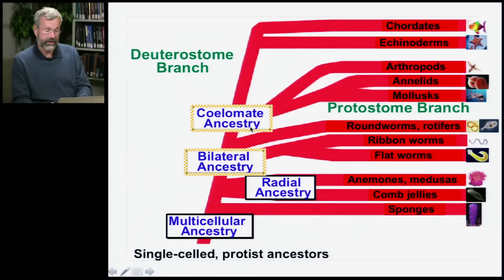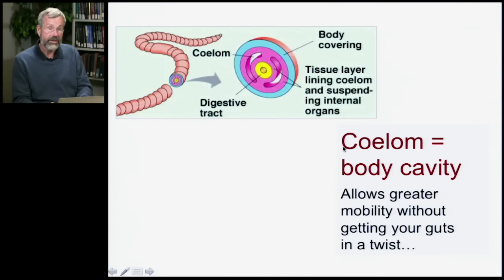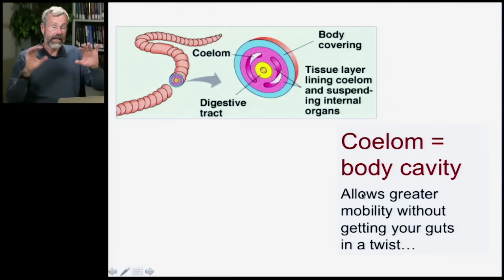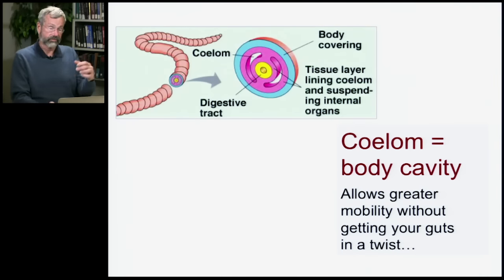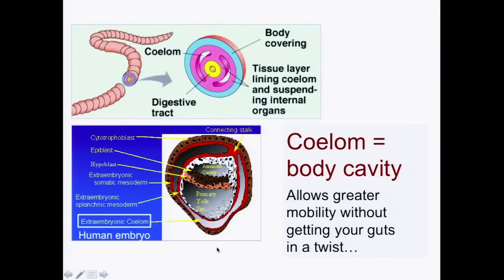Next we want to look at the coelomates, which give rise to many more complicated organisms. A coelom is a body cavity separated from the outer body. In an earthworm, you have the body covering and then the coelom — the digestive tract is suspended inside, not directly attached to the outer wall. This allows for greater flexibility and mobility so you can wriggle without getting your guts in a twist. The coelom is already present in embryonic development, including in our earliest human embryo phases.